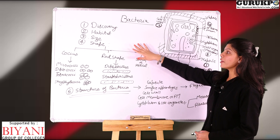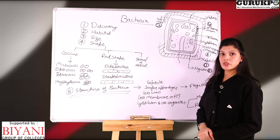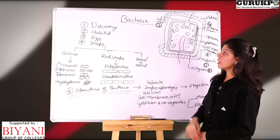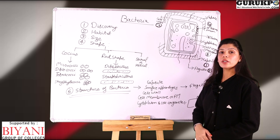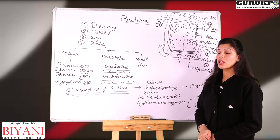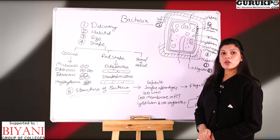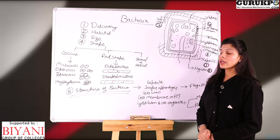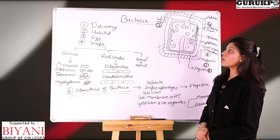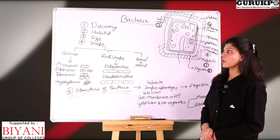There are 5 major points of the structure of a bacterial cell. First is the discovery. Bacterias were first of all discovered by Antonie van Leeuwenhoek, and Leeuwenhoek is also called as the father of bacteriology.